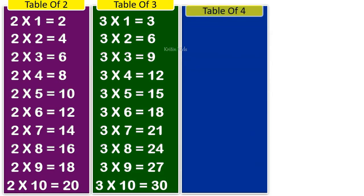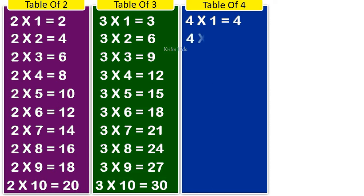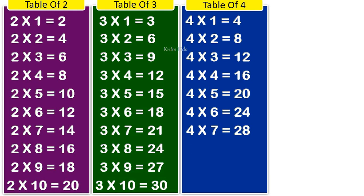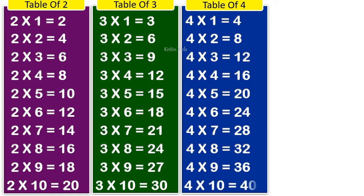Table of four. 4 1s are 4, 4 2s are 8, 4 3s are 12, 4 4s are 16, 4 5s are 20, 4 6s are 24, 4 7s are 28, 4 8s are 32, 4 9s are 36, 4 10s are 40.